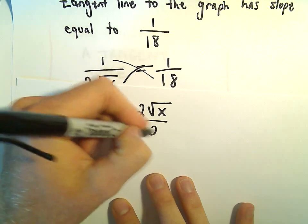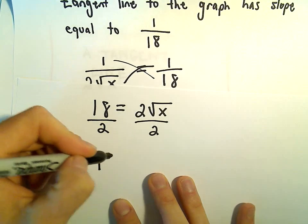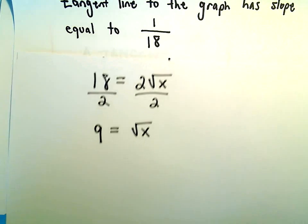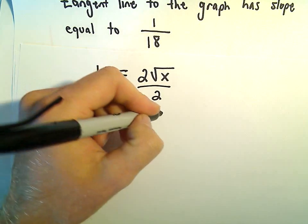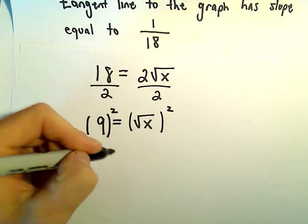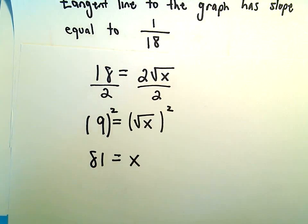We can divide both sides by 2. 18 over 2 is 9. On the right, we're left with the square root of x. To solve for x, all we need to do now is square both sides. On the right side, we're left with x, and 9 times 9 is 81.